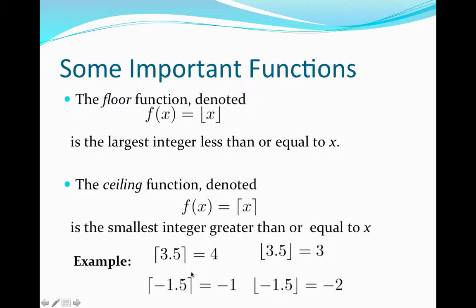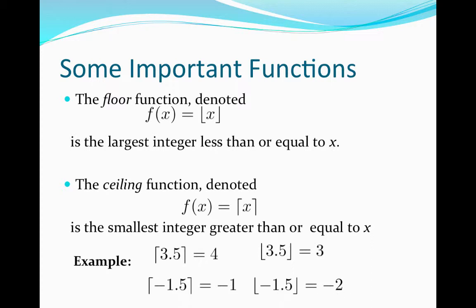You need to be careful when dealing with negative values, because the bigger the negative, the smaller the integer. For example, the ceiling of minus 1.5 is going to be the smallest integer greater than or equal to minus 1.5. Since minus 1 is bigger than minus 2, and minus 1 is bigger than minus 1.5, when dealing with negatives you're actually going to drop the decimal part when taking the ceiling. And in the case of the floor, you round down — so the floor of negative 1.5 is negative 2, because negative 2 is the largest integer less than or equal to minus 1.5.